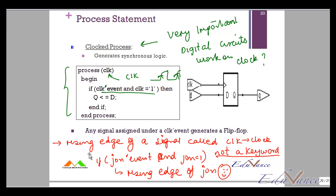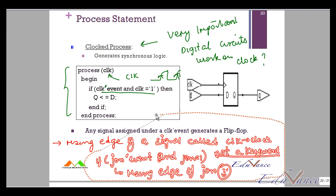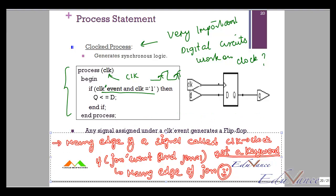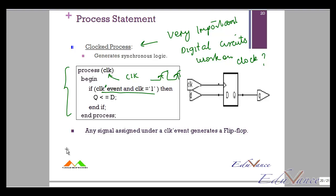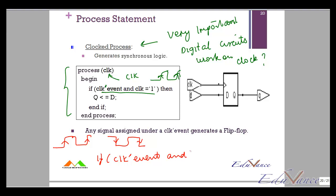To specify a falling edge instead of a rising edge, all you need to change is: 'if clk'event and clk = '0'' — that describes the falling edge of the clock.